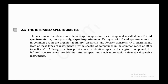The topic is the infrared spectrophotometer. First I will discuss how this instrumentation works, and then we will discuss how a sample is prepared. The instrument that determines the absorption spectrum for a compound is called an infrared spectrometer, or more precisely, a spectrophotometer.